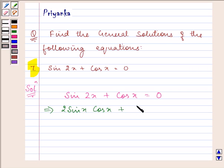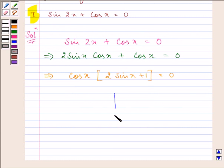Right? You remember the identities I hope. Plus cos x is equal to 0. Taking cos x common, we have in the bracket 2 sin x plus 1 and now we have reached the position to find out